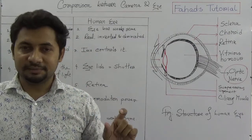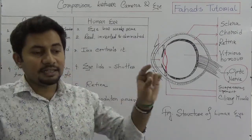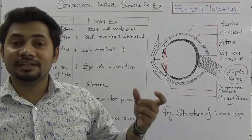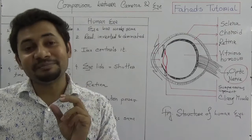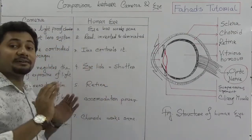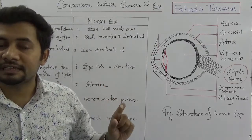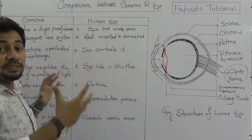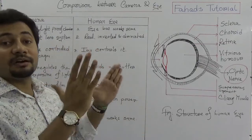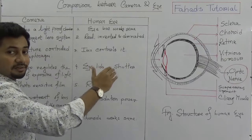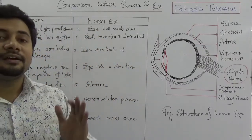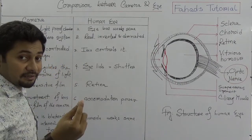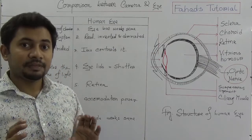Secondly, in a camera there is a convergent lens system. When there is a convergent lens system, the rays converge and a real, inverted, and diminished image is formed. Similarly, in our eyes a real, inverted, and diminished image is also formed. So this is a similarity between human eyes and camera — in both cases a real, inverted, and diminished image is formed.